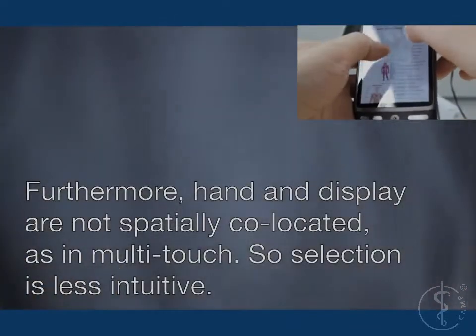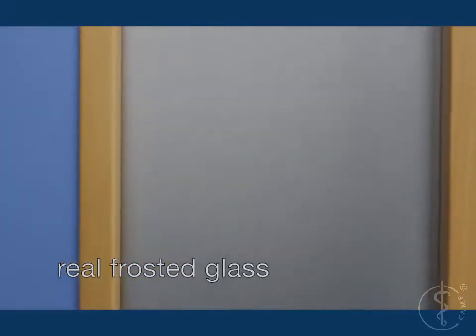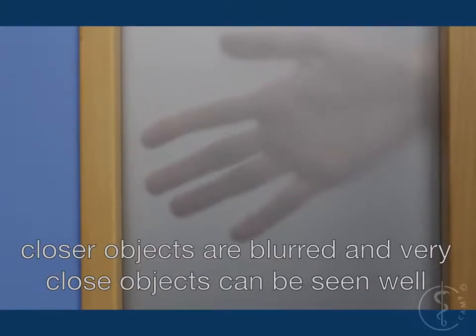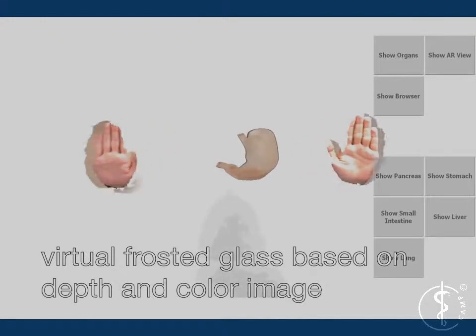We propose a solution where we use the metaphor of frosted glass. Objects far behind frosted glass cannot be seen. Objects that are closer are seen blurred, and objects that touch frosted glass can be seen well. By modifying the color image based on the depth image, we create a virtual frosted glass to replace the haptic feedback by visual feedback.